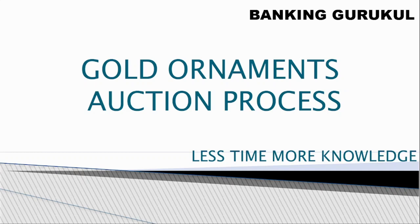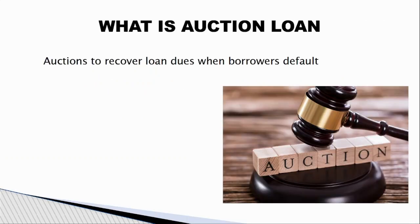If the borrower is not paying regularly and the account becomes NPA, the bank or financial institution will send an auction notice to the customer first. If the customer does not respond within the given time frame, the account will go to the auction process. The bank initiates this to recover loan dues from default borrowers.